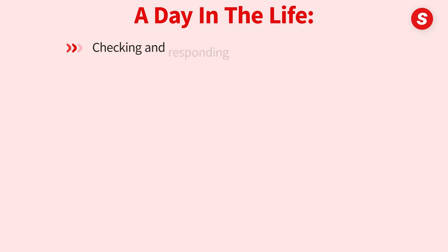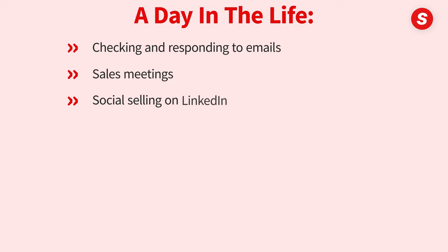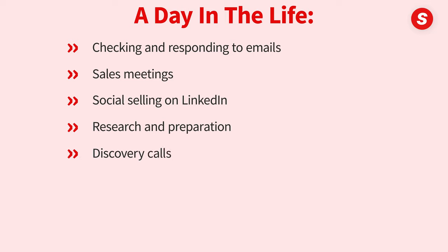A typical AE starts their day around 7:30 and it ends maybe 4:30 or 5:30, depending on how hard you want to hustle. In the morning, you're going to be checking and responding to emails from customers and prospects, ensuring that you're timely with all your communications. There's probably going to be some kind of daily sales meeting to solve problems and set the day's priorities for all the account managers within the company. You're going to be social selling on LinkedIn and researching and preparing for the day's sales calls.